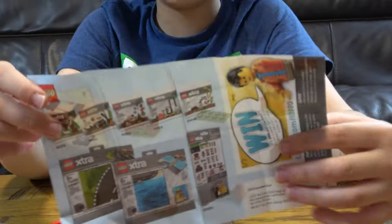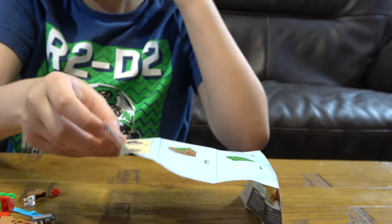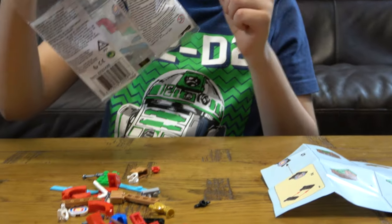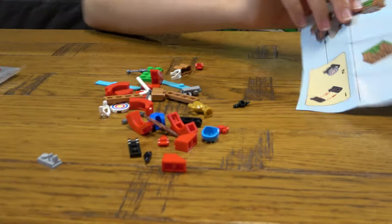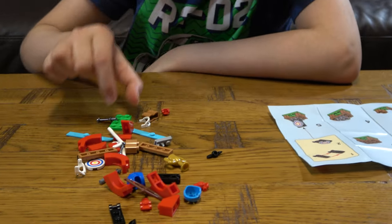So at the back it just shows all the other LEGO Extra sets. The set number is 40375. So yeah, let's start building this really small LEGO set.